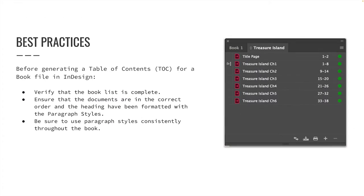Let's talk about some best practices before generating a table of contents. Verify that the book list is complete. Ensure that all documents are listed in the correct order and that all headings have been formatted with the appropriate paragraph styles. Be sure to use paragraph styles consistently throughout the book. Avoid creating documents with styles that have identical names but different style definitions. If the necessary styles do not appear in the table of contents dialog box pop-up menus, you may need to synchronize the book so that styles are copied to the table of contents document.